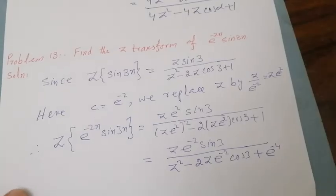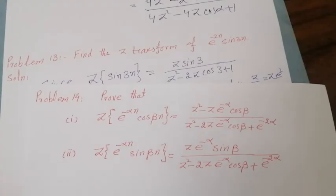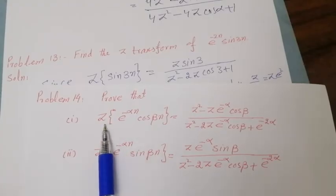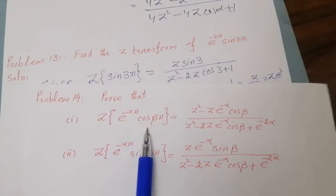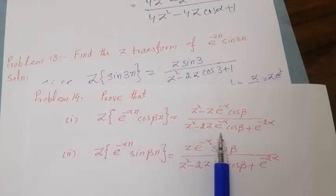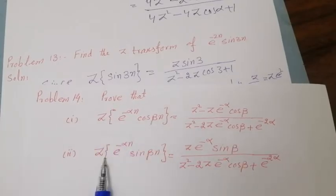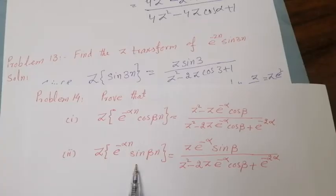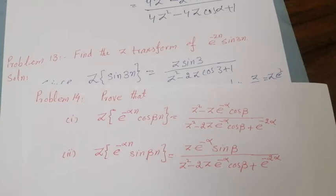Using the same technique, you have to obtain the Z transform of e^(−αn)·cos(βn) and similarly the Z transform of e^(−αn)·sin(βn). These are your homework problems.